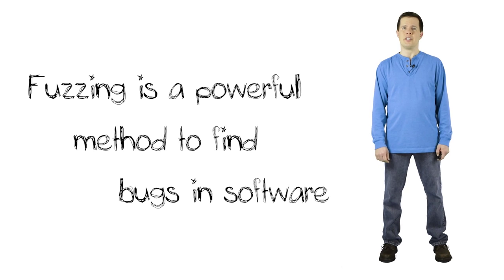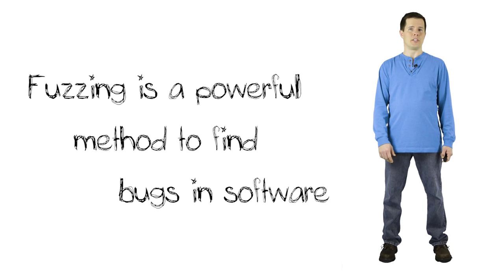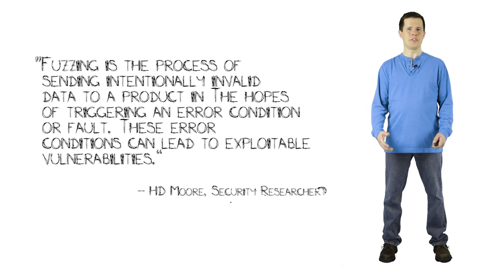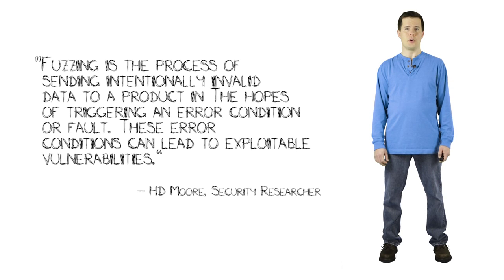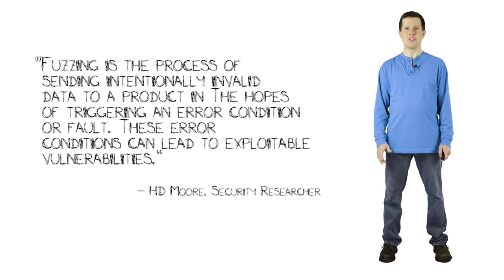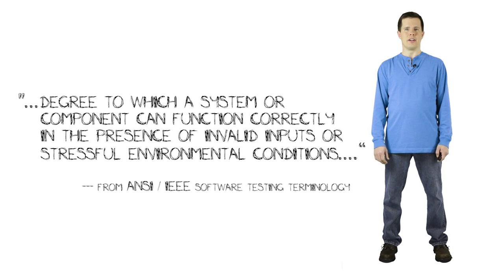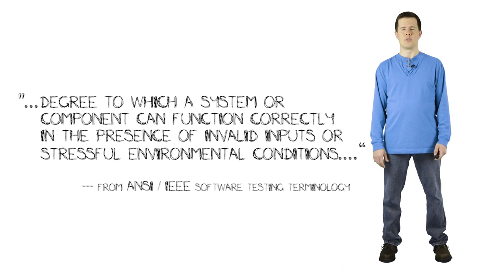The whole point is you're trying to find problems in software before somebody else does — both from a security standpoint and from a robustness standpoint. Fuzzing is the process of sending intentionally invalid data to a product in the hopes of triggering an error condition or fault. These error conditions can lead to exploitable vulnerabilities. There's also a definition from ANSI IEEE describing robustness testing as the degree to which a system or component can function correctly in the presence of invalid inputs or stressful environmental conditions.